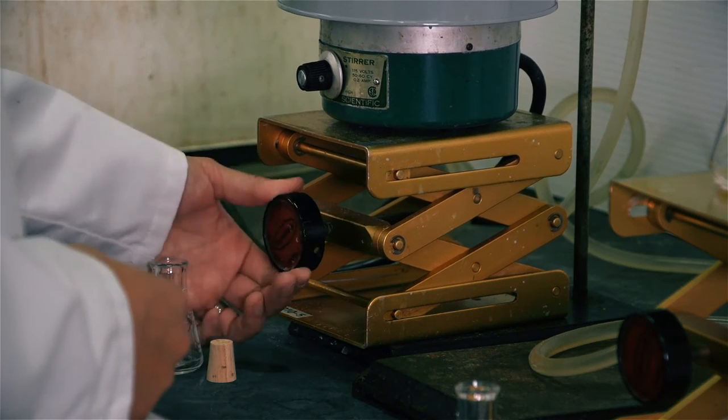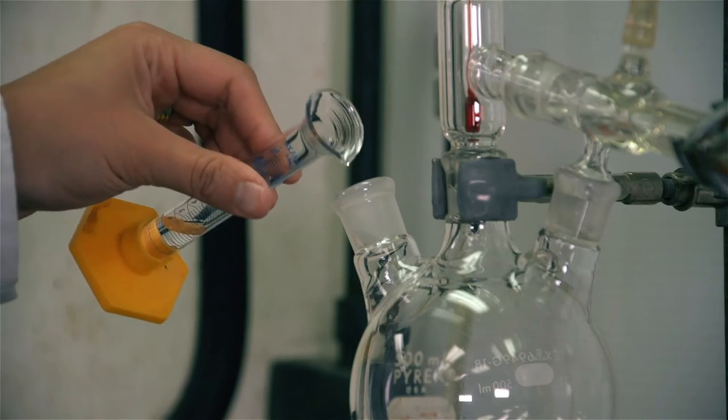Lower the heating mantle. Return the distillate to the boiling flask and add 3 ml of water.